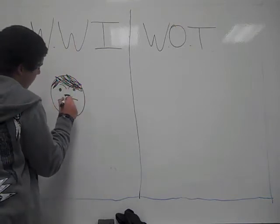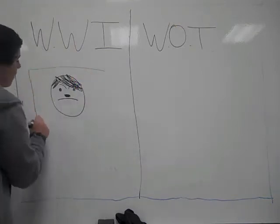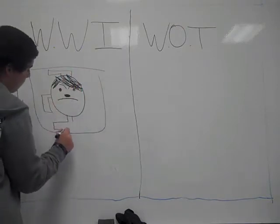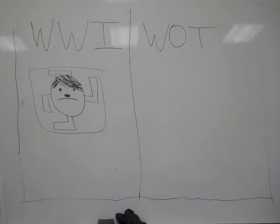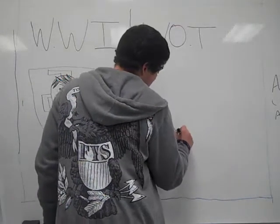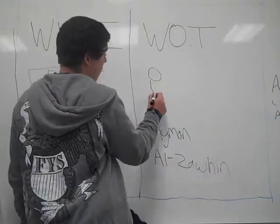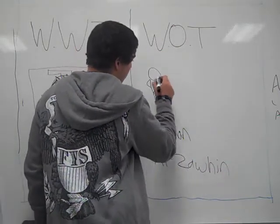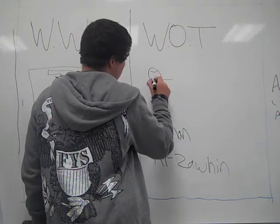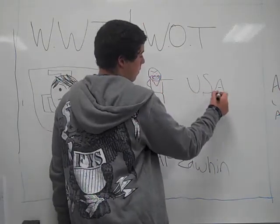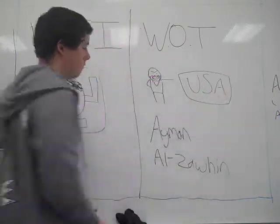Following World War I, Adolf Hitler rose to power and became the Fuhrer of Germany. One of the predicted leaders for Al-Qaeda is an Egyptian Muslim named Ayman al-Zawahiri. He is one of the leaders of the Egyptian Al-Qaeda, and he is fluent in English as well as Arabic.